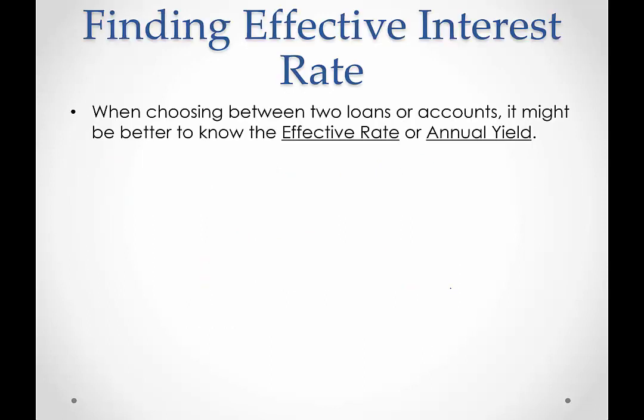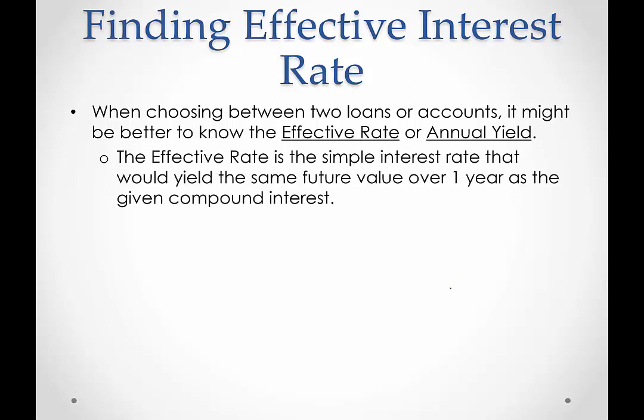If you have an option between two loans or accounts, you might want to know this effective interest rate, or the annual yield. Basically what it is, is it takes a compound interest rate and converts it into a simple interest rate that would yield the same future value over one year as that given compound interest. So it's taking something that's a compound interest rate and converting it to a simple interest rate for one year.